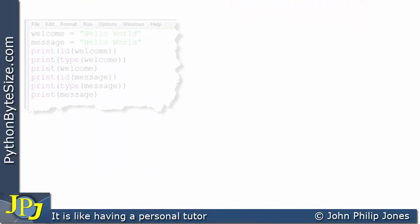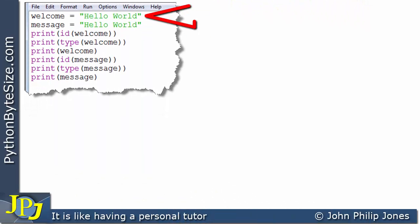Consider this computer program here. Let's look at the first line: welcome is assigned hello world. When we see a program statement like this, what's really happening is that the name welcome, the identifier welcome, is being bound to an object. In this case, it's going to be a string object, and that string object is going to have the value of hello world.